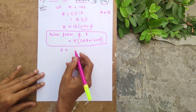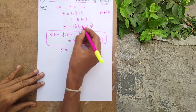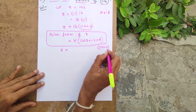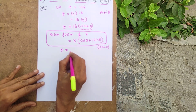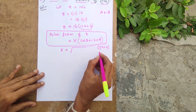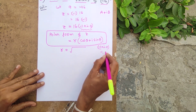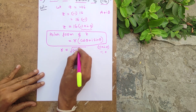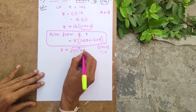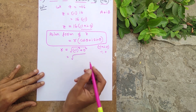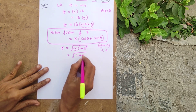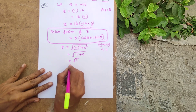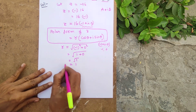Small r is equal to the square root of a² + b². Here a = -1, b = 0. So r = √((-1)² + 0²) = √(1 + 0) = √1 = 1. Therefore small r equals 1.